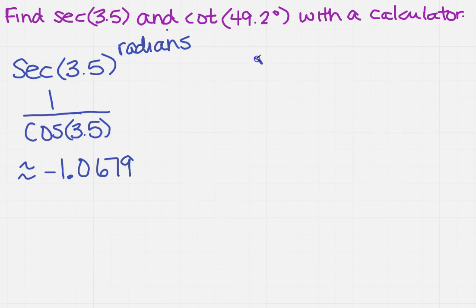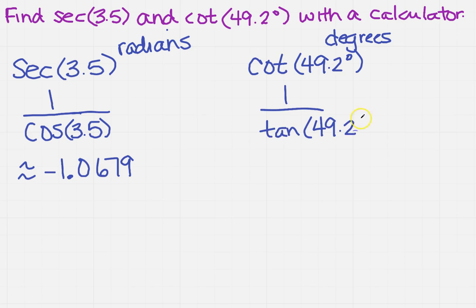So now what about the other one? I've got the cotangent of 49.2, and look, there's that degree sign. Make sure that your calculator is in degrees mode so that you get the correct answer. Again, cotangent is not on the calculator, but we know that it is 1 over the tangent of 49.2 degrees.